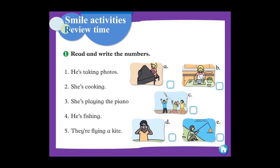Repeat after me. Number one: he is taking photos. He is taking photos. You can look at the picture for 'taking photos.' Yes, D — right. Write inside the box. Number two: she is cooking. She is cooking. You can find the picture for 'cooking.' Yes, B — very good. Write number two.